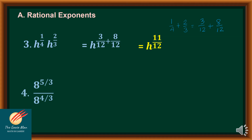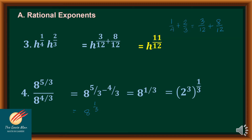Similarly, if I have 8 raised to 5 over 3 divided by 8 raised to 4 over 3, I use the law of exponents. Since I have the same base, I subtract the exponents: 5 over 3 minus 4 over 3, resulting in 8 raised to 1 over 3. Note that 8 can be expressed as 2 to the 3rd power. I can factor out 3, giving 2 raised to 1, or simply 2.